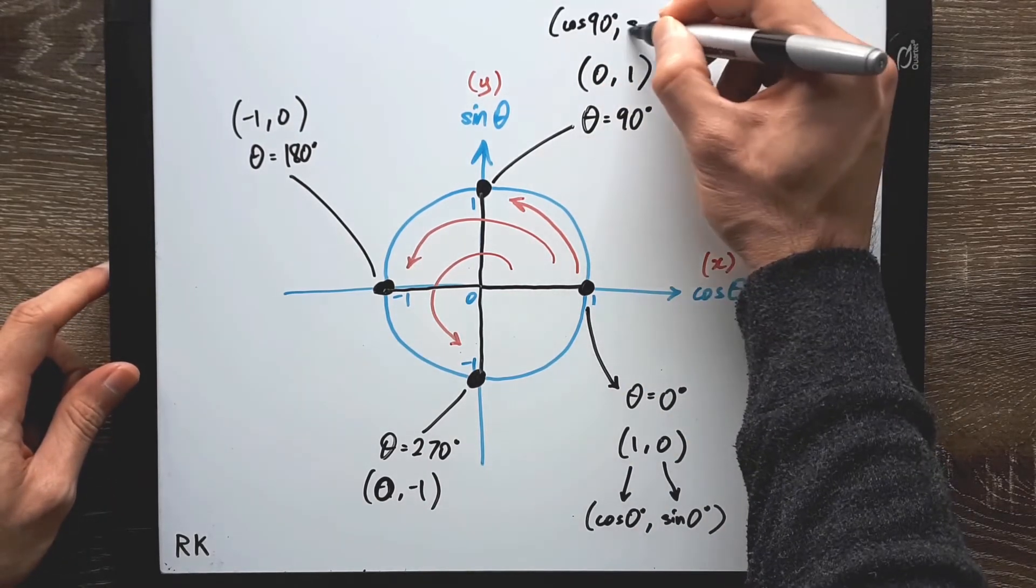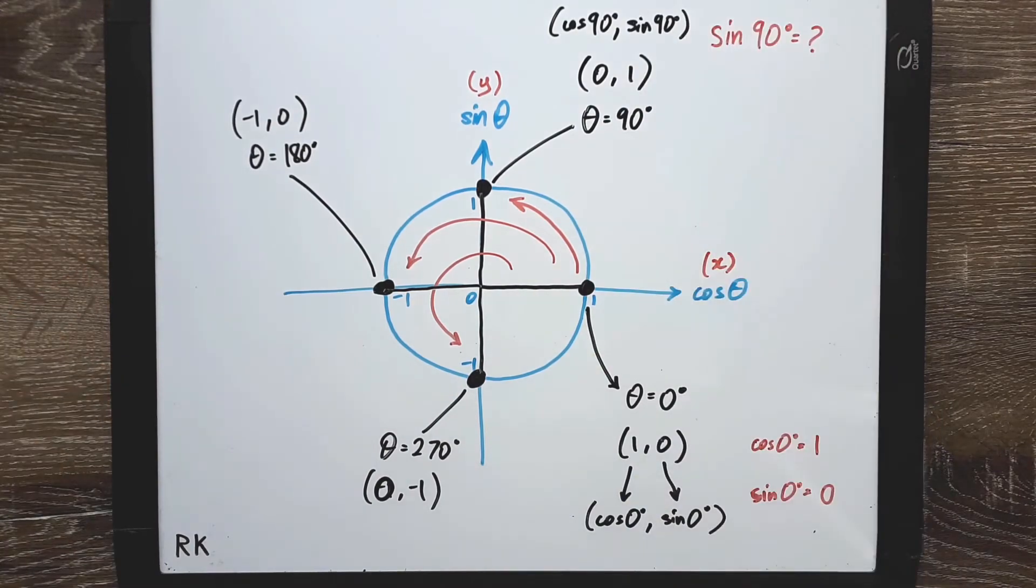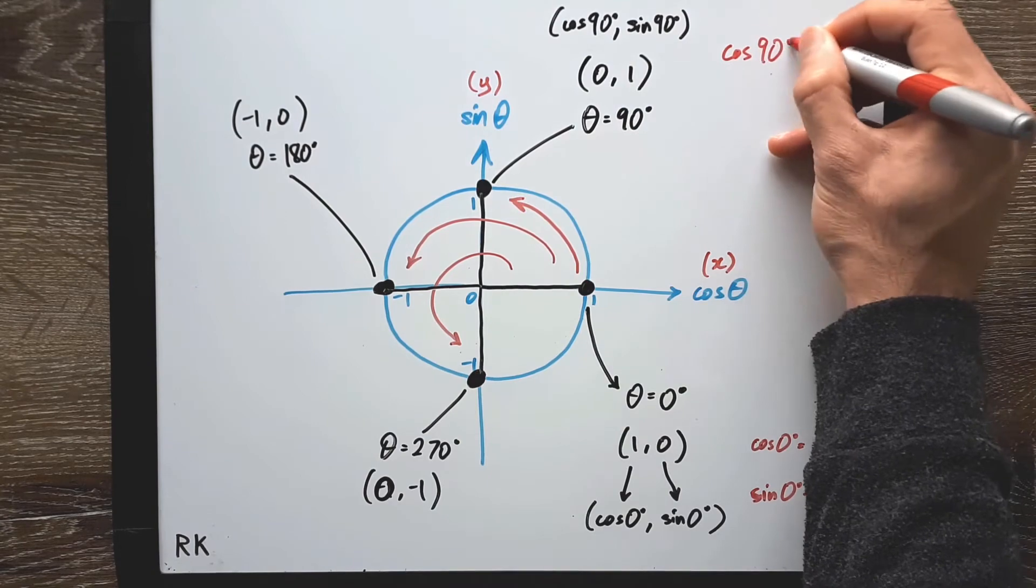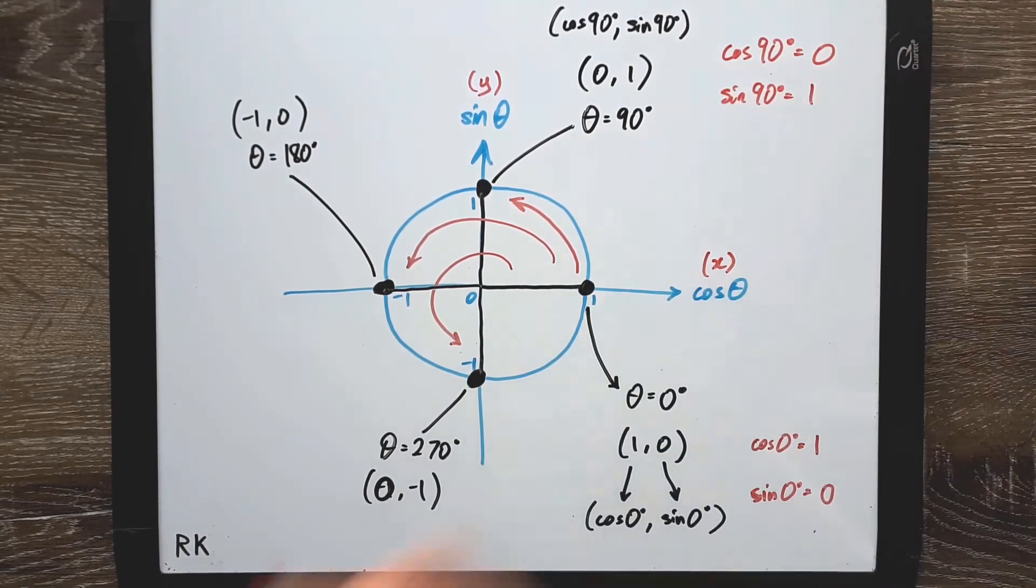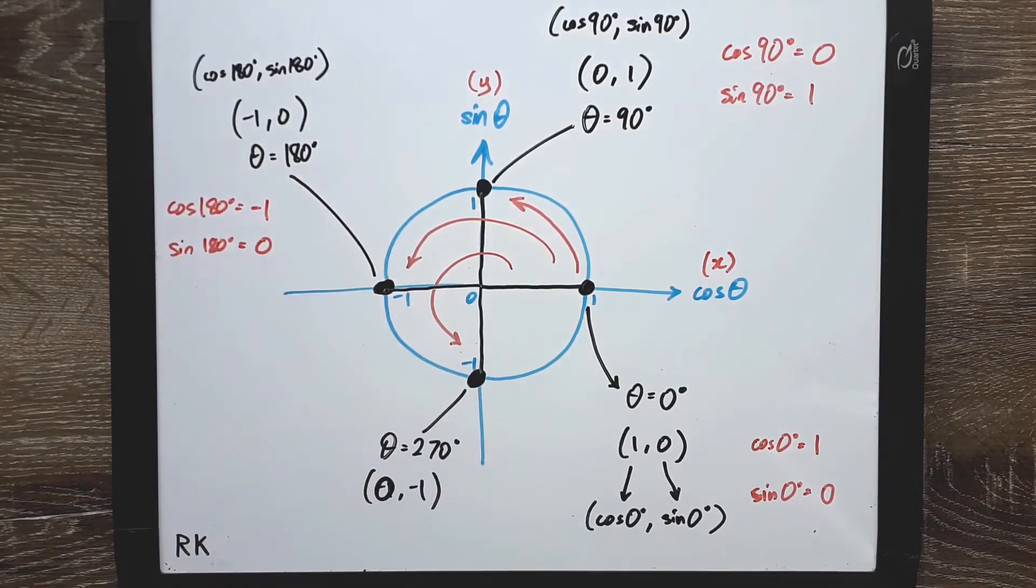So in a similar fashion at 90 degrees we could rephrase the coordinates as cos 90, sin 90. This means cos 90 equals 0 and sin 90 equals 1. And we can do something similar for the other quadrantal angles.